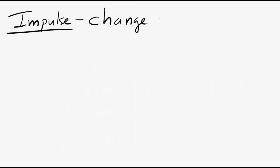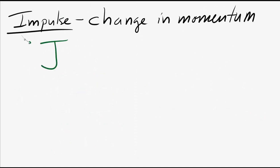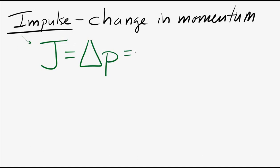Impulse is the change in momentum. We use the variable capital J for impulse. So J equals delta-p, the change in momentum. Since the change in something equals the final value minus the initial value, the impulse equals the final momentum minus the initial momentum.